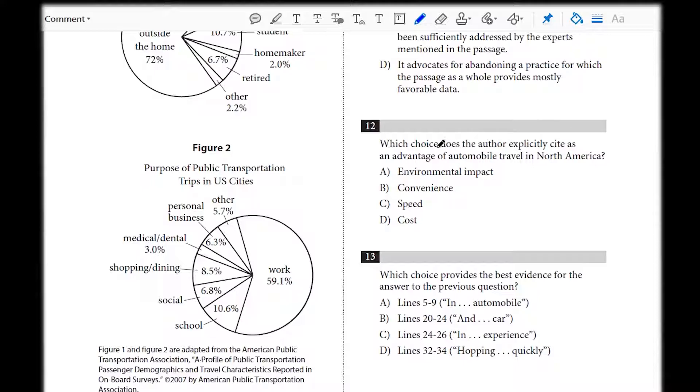So this question is not giving us any specific lines to look at. And we're talking about automobile travel, something that the author generally is not in favor of. He talks at length about the benefits of public transportation. So this probably only came up one time.